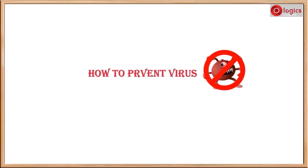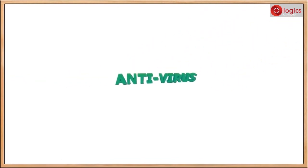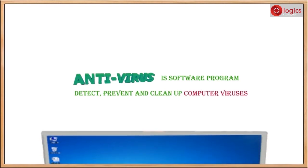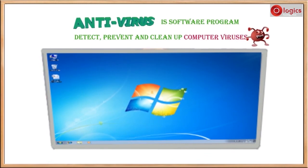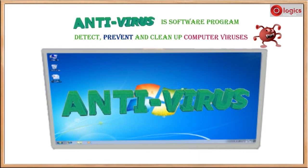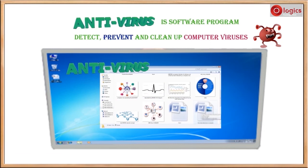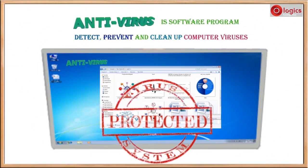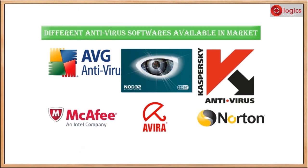How to prevent a virus? Antivirus is a software program that detects, prevents, and cleans up computer viruses. It runs inside your computer and does not allow viruses to enter. In case a virus is already inside the computer, it will be detected and cleaned up. There are different antivirus softwares available in the market. Make sure you update your antivirus software to its latest version in order to prevent the latest viruses.